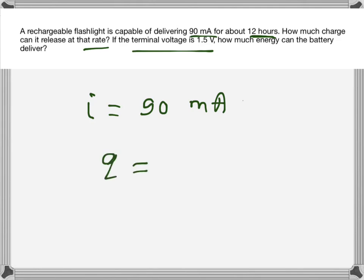The charge q will be i times t. i has to be in amps, so 90 times 10 to the power minus 3.